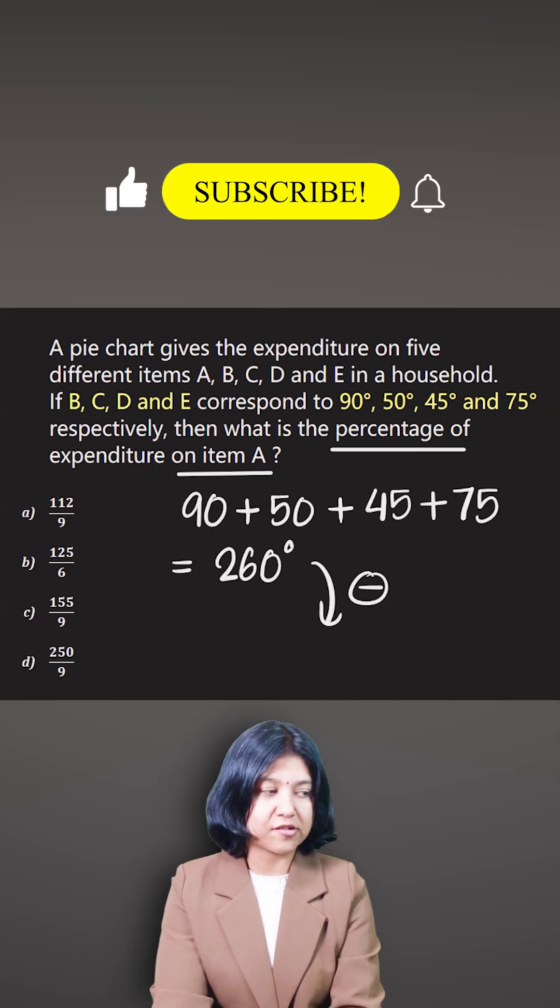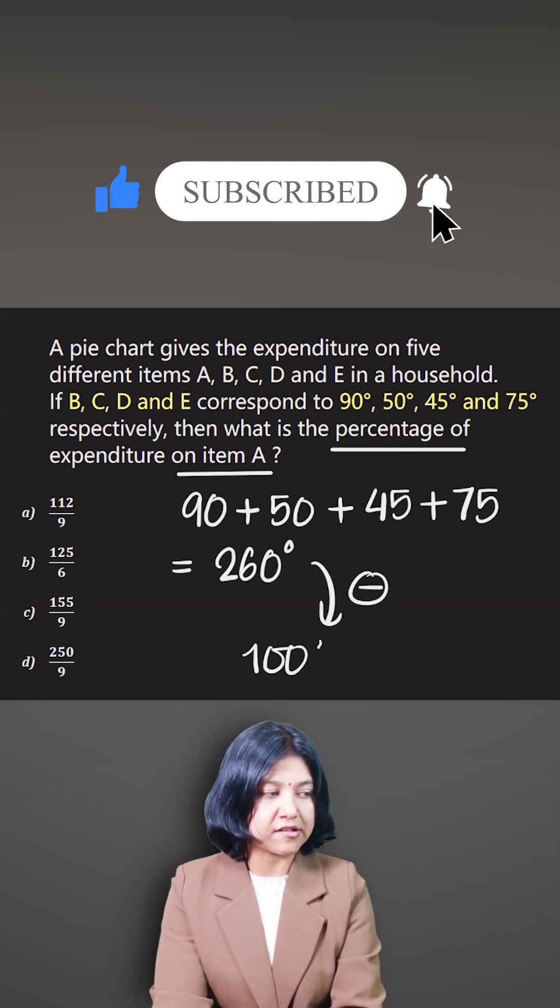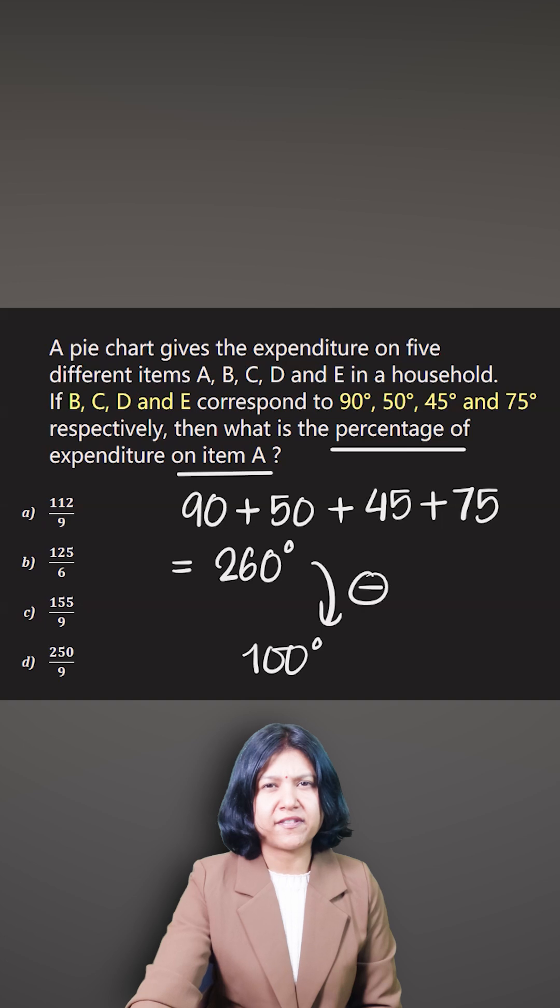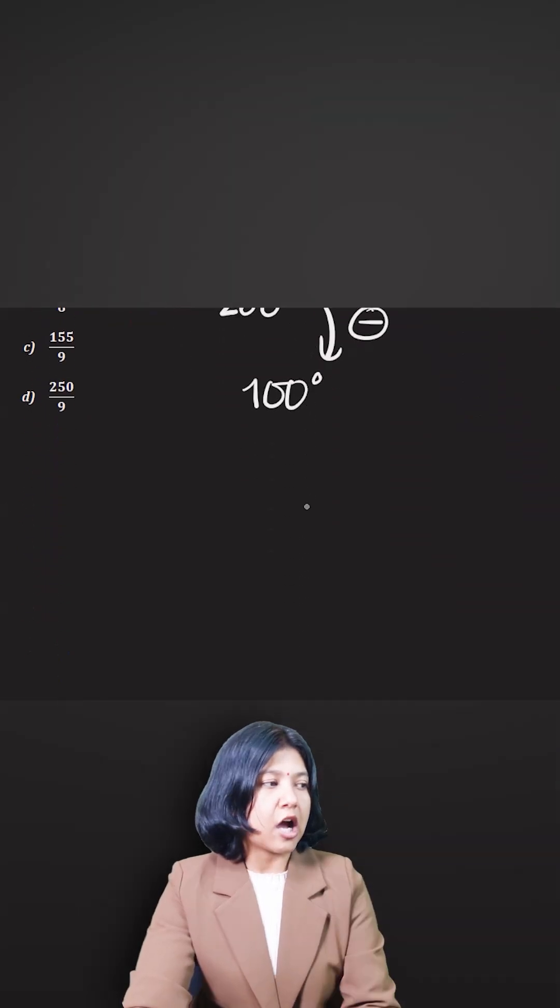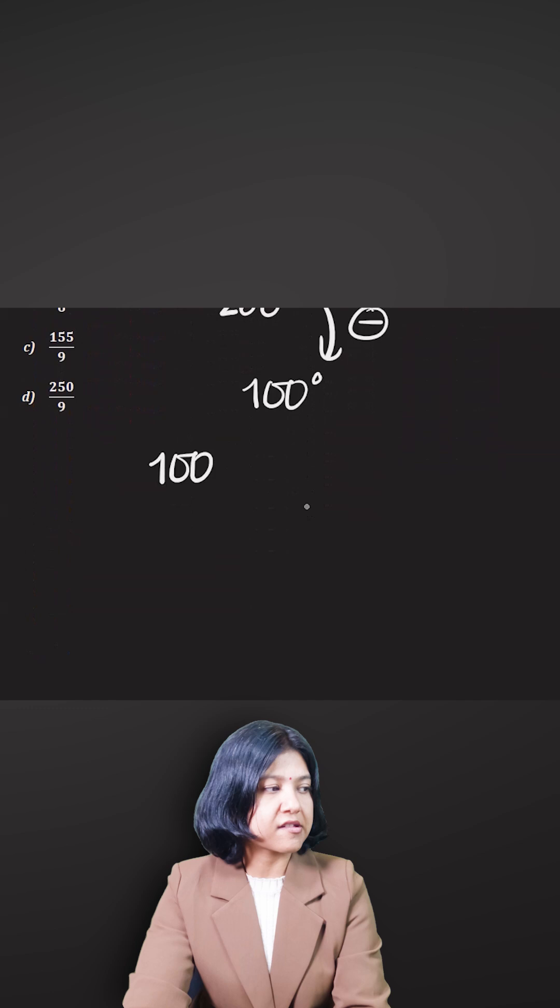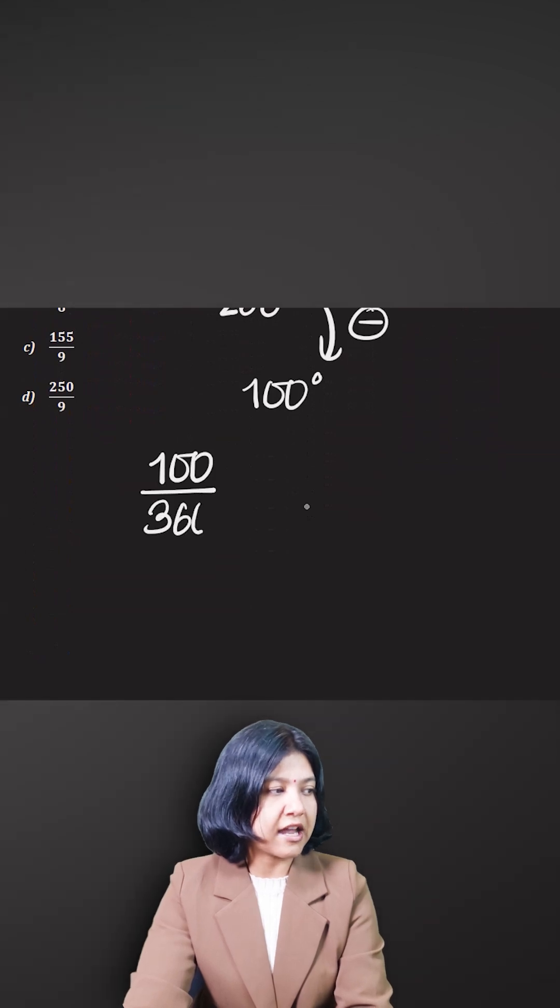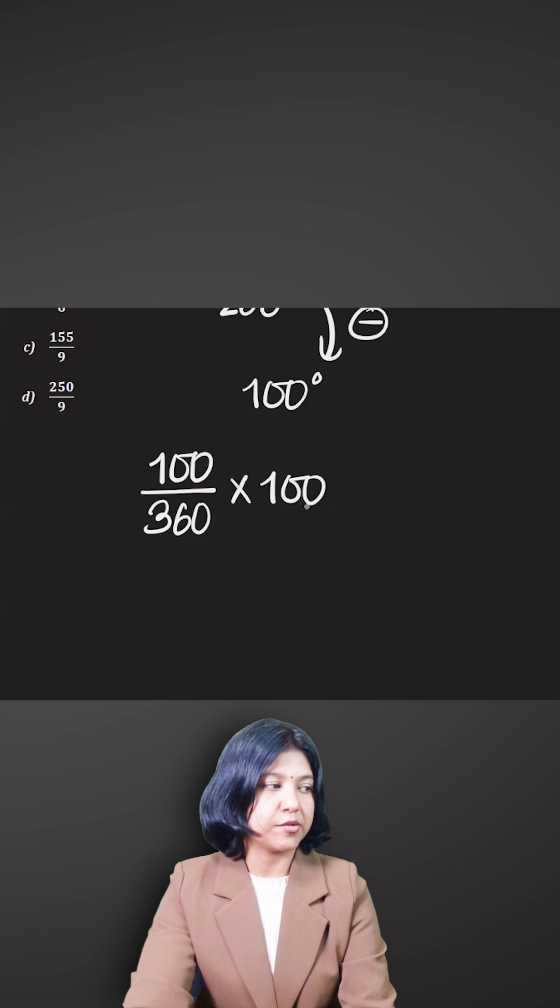For percentage of expenditure, what we do is we want to see how much is this 100 degrees out of the total 360. And because we are finding percentage, don't forget to times it by 100.